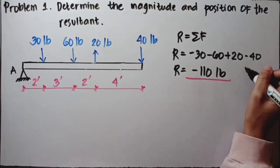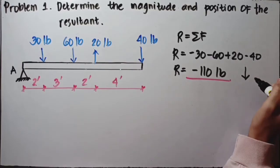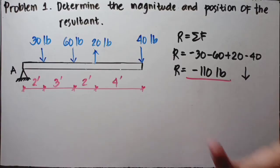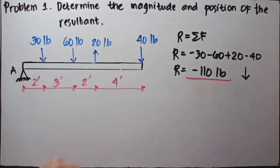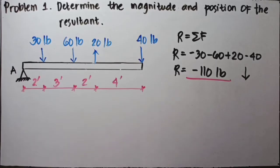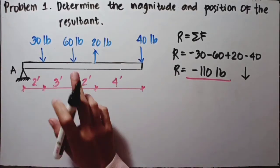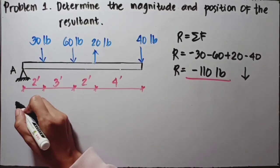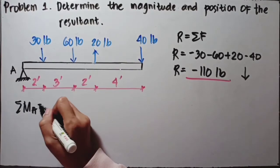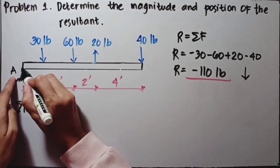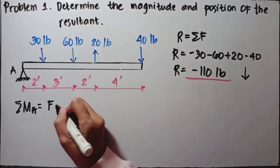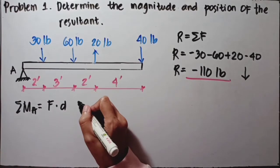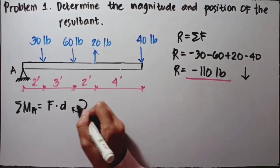Now we know the magnitude of the resultant, but we don't know where it is located on the beam. So we'll find the location of the resultant. First, we take the moment of all the parallel forces in the given problem. Let's start with the summation of moments at A — at support A, or point A. Summation moment at A equals force times distance. We'll assume that all clockwise moments are positive.